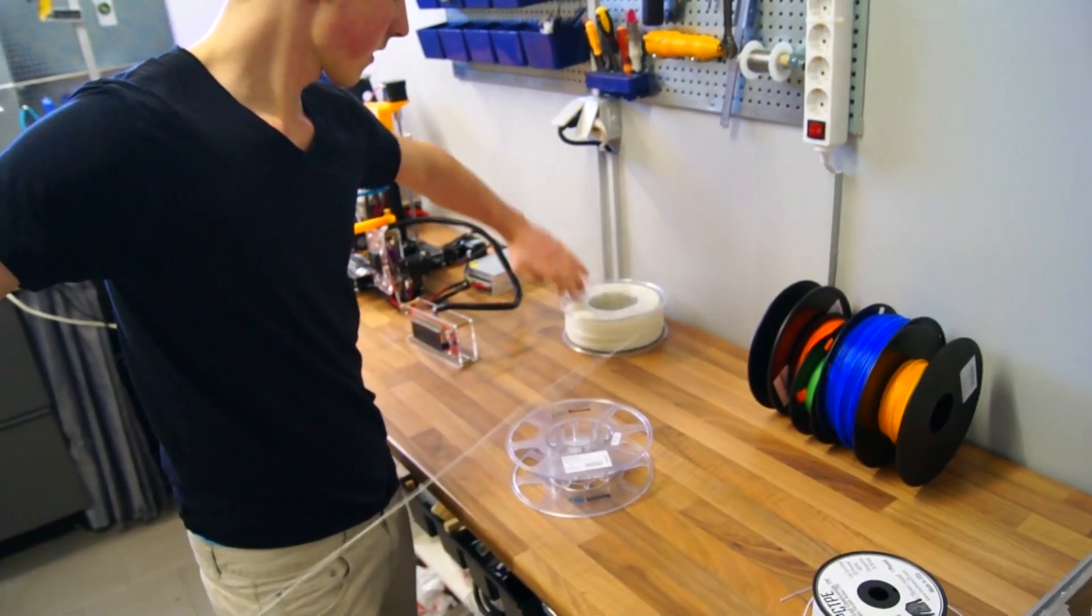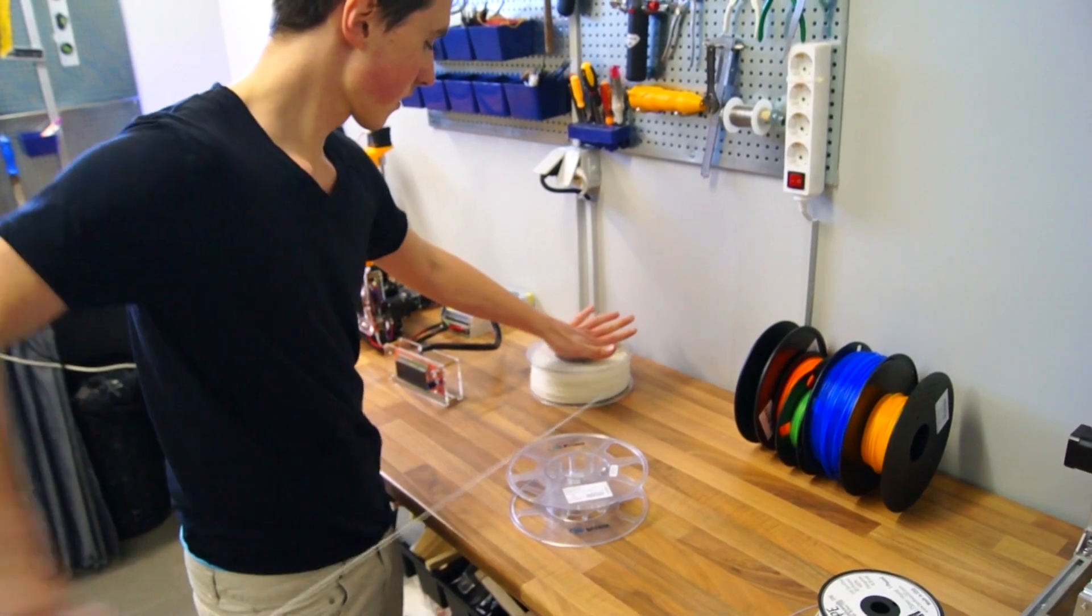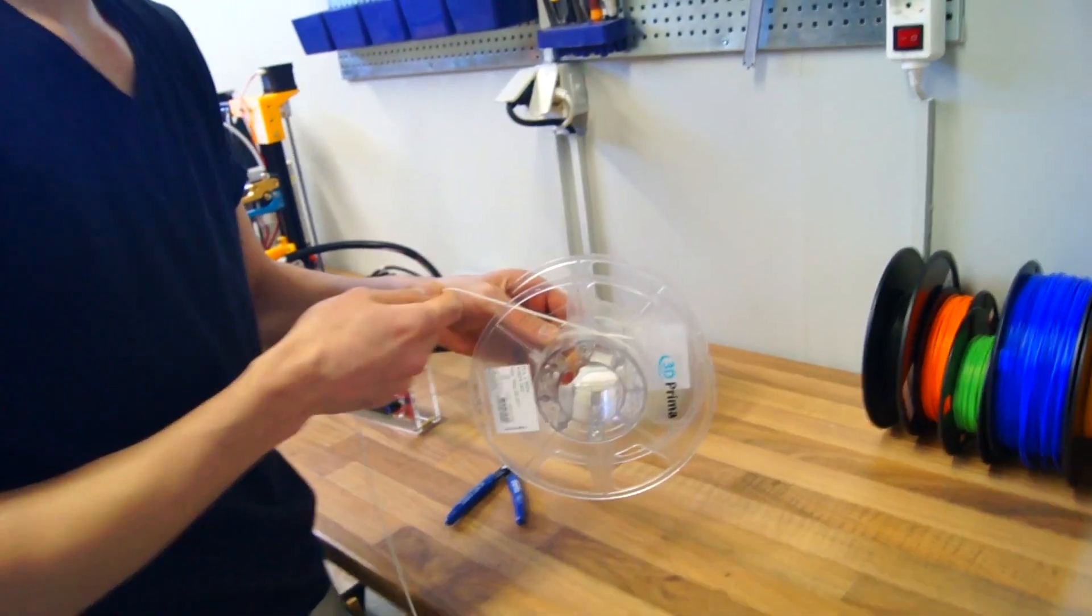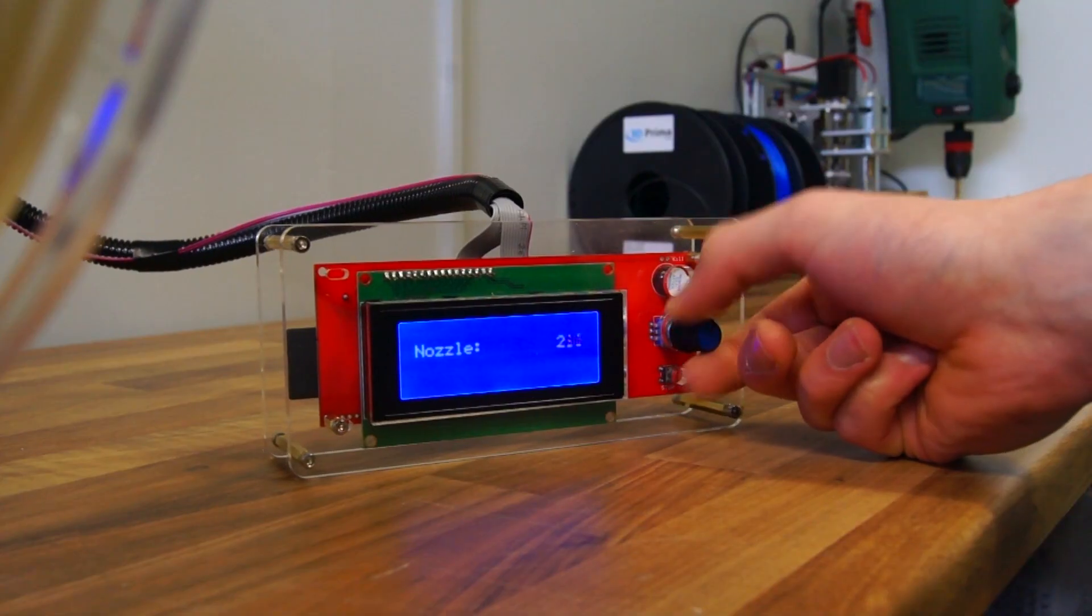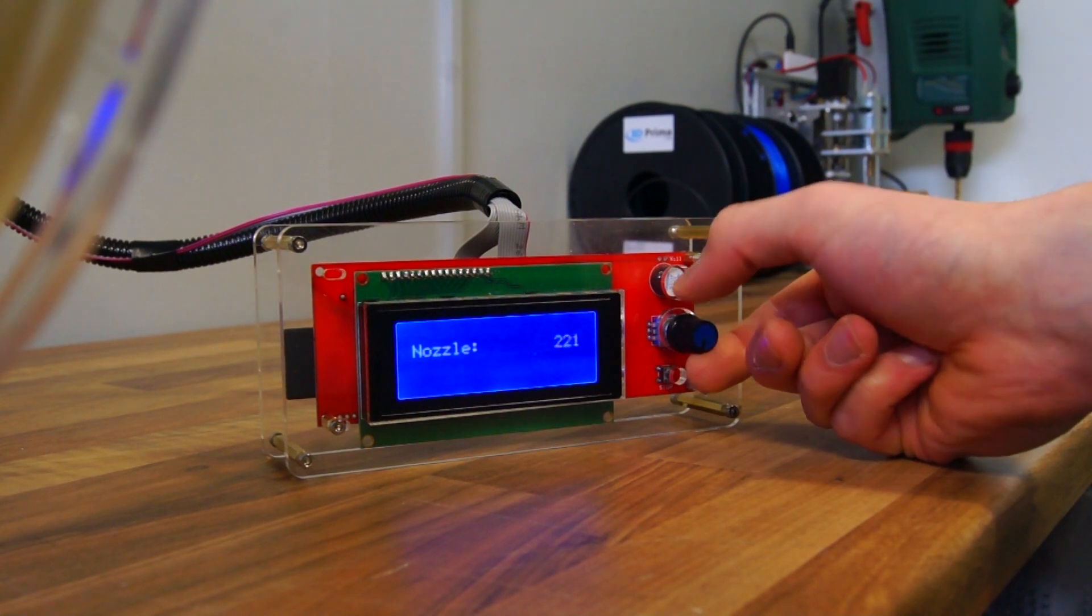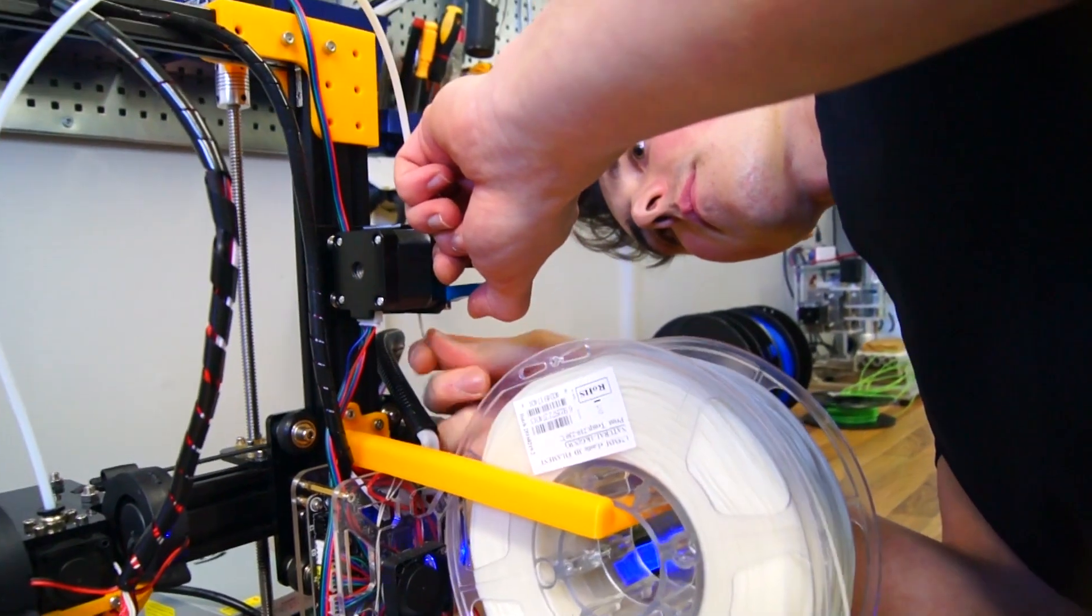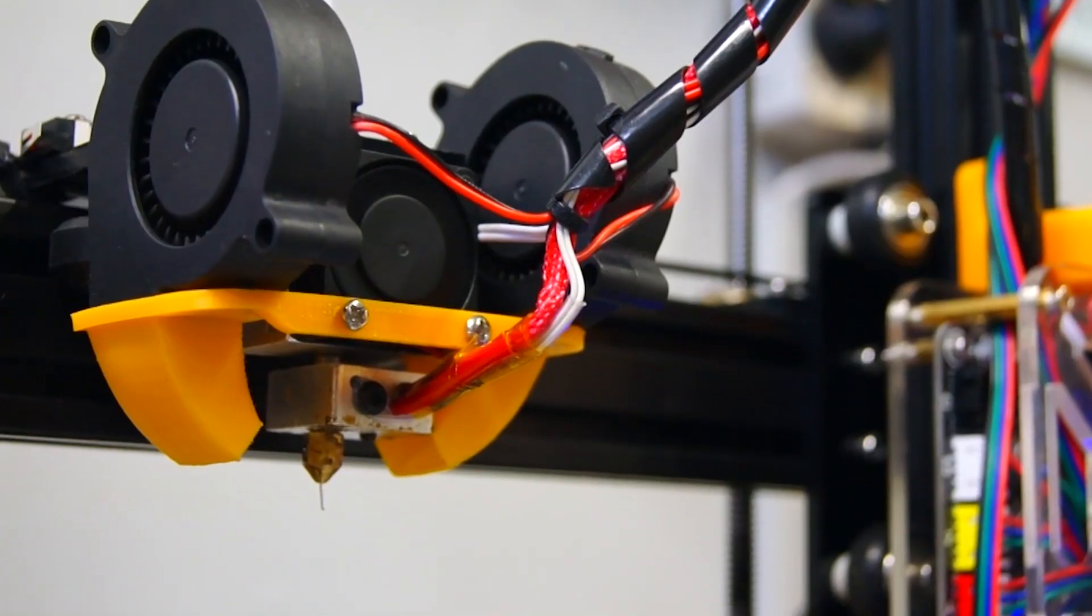Both the N88 and the Tevo Tarantula will be printing the E-Sun Elastic, so I grabbed an empty spool and rolled it up. I heated up the nozzle to 220 degrees and pushed the filament till I could see it coming out the other end.